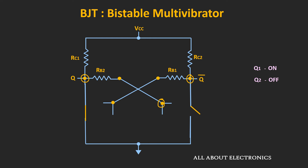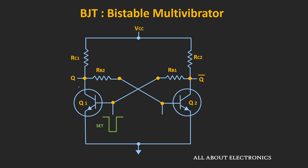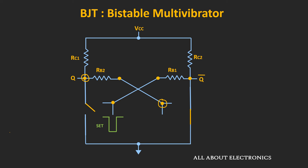But depending on which transistor conducts more, the reverse case is also possible. In any case, when we apply a trigger pulse to the base of transistor Q1, it will set output Q to high. That means, whenever we apply a negative-going trigger pulse to the base of Q1, transistor Q1 will go into the cut-off region and act as an open circuit. So the voltage at the collector of Q1 will become high — meaning output Q will become high. As the same voltage is applied to the base of Q2, Q2 will still remain in the cut-off region. This output Q will remain high until we apply the reset pulse.